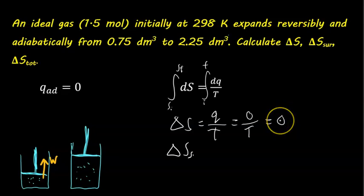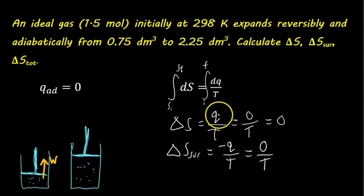And the same thing for the surroundings as well. The change in entropy for the surroundings is negative Q over T, because energy lost by the surroundings is gained by the system. These are equal and opposite. Negative means the surroundings lost it or gained it depending on if Q is positive or negative. But there's no Q, there's no energy being transferred as heat, so this is just zero. So the change in entropy of the surroundings is zero.